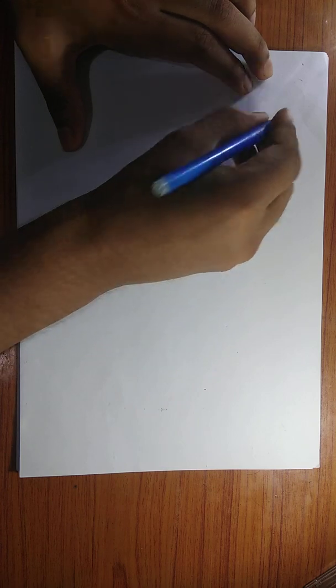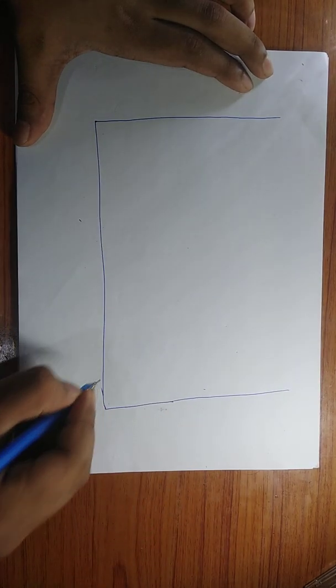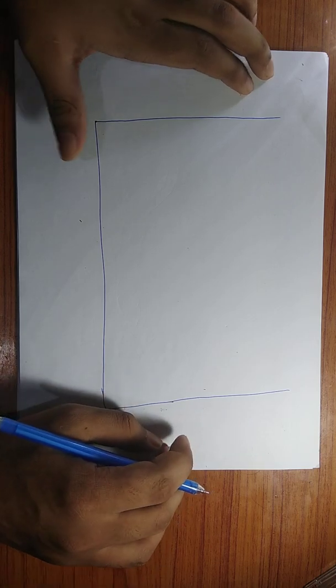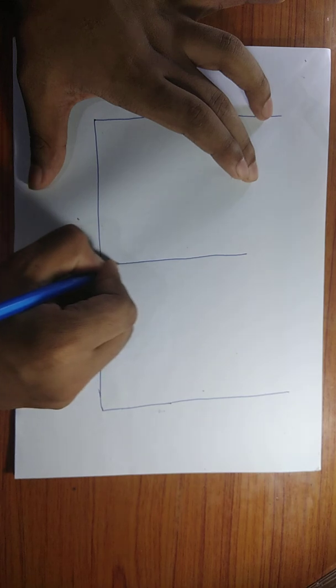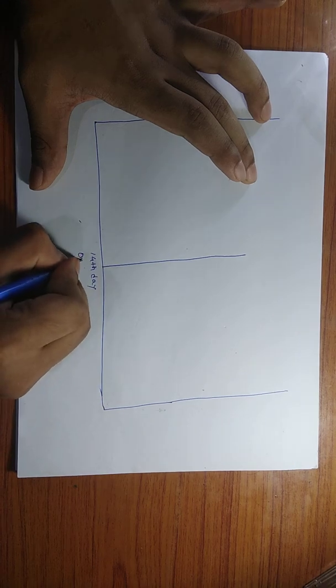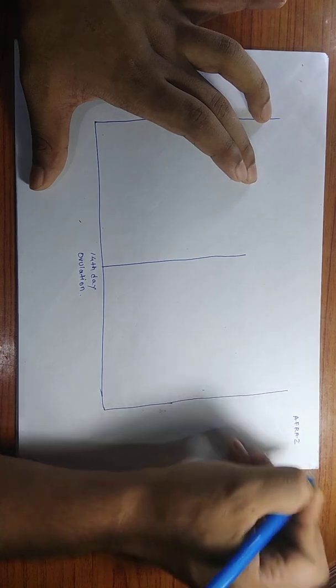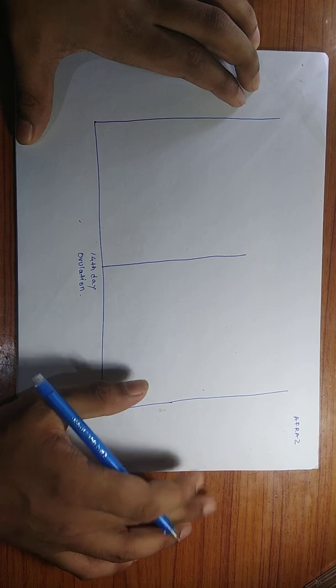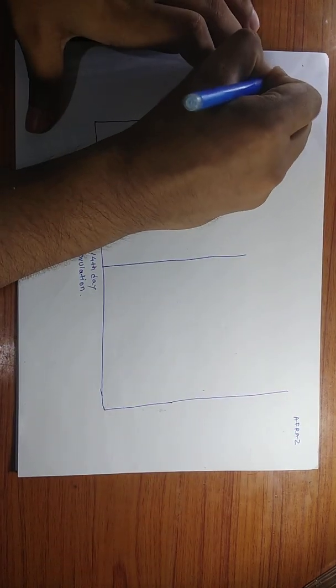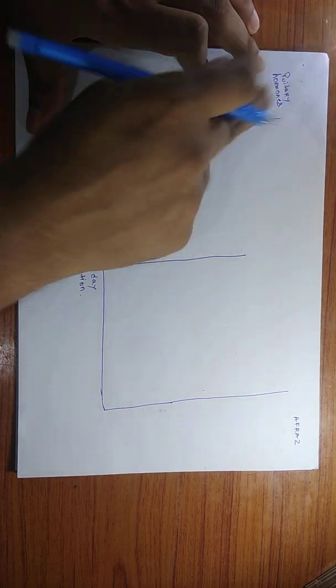Welcome back. We'll be talking about the menstrual cycle using a graph. If I draw a graph here, and draw a line in the middle, that represents the 14th day — the day on which ovulation occurs. Now I'll draw the pituitary hormones on this side.